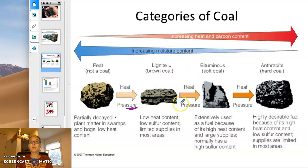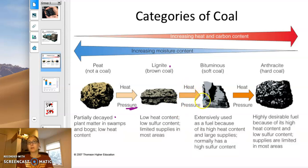You have more energy per unit volume when you burn lignite. Still, if you leave it in the ground for another couple hundred thousand years under continued pressure, you end up with something called bituminous coal, or bitumen.